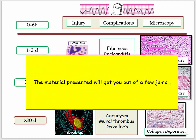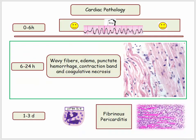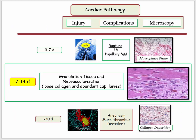The material just presented covers around 90% of the cardiac pathology you should be familiar with. For completeness, something does occur between six hours and the neutrophilic phase — a hodgepodge of terminology including wavy fibers, edema, punctate hemorrhage, contraction band, and coagulant necrosis. There is no need to memorize this — just be aware that if they start talking about these findings and it isn't neutrophils, macrophages, or collagen, they are in the six to 24 hour range. Days seven through 14 are characterized by granulation tissue and neovascularization, with loose collagen and abundant capillaries — lower yield as there aren't juicy clinical complications.